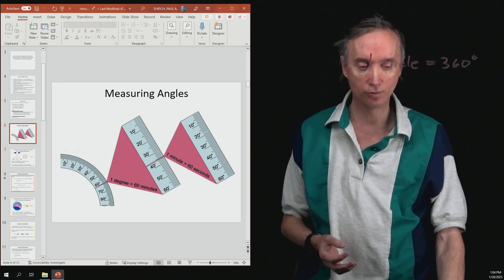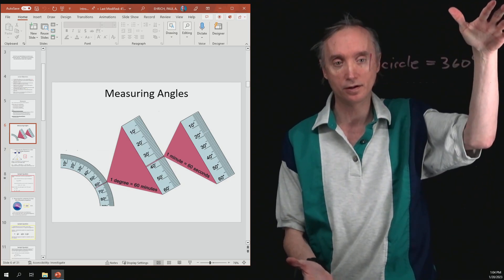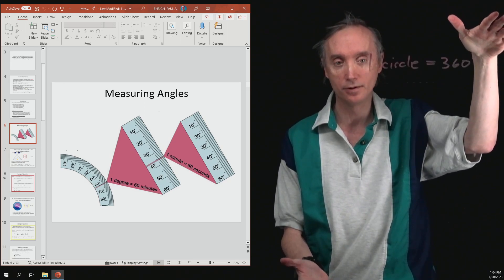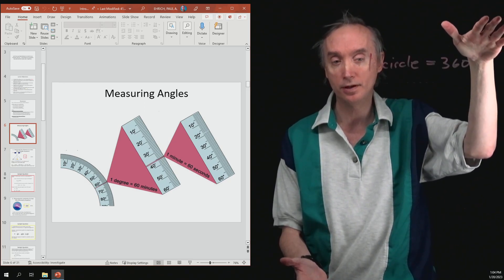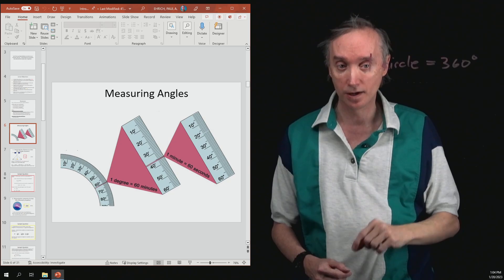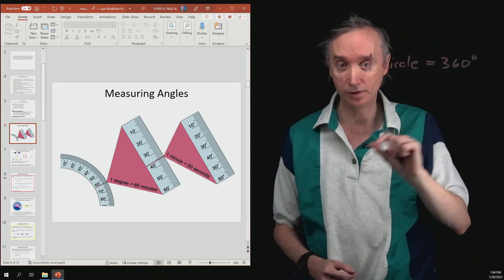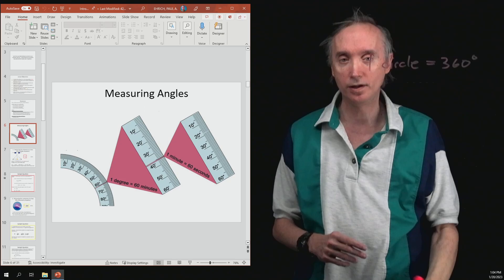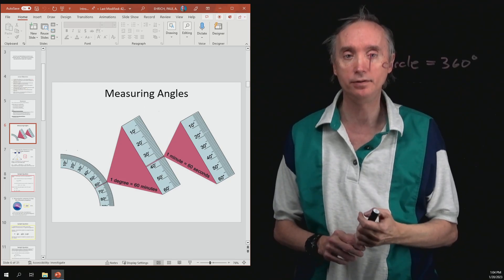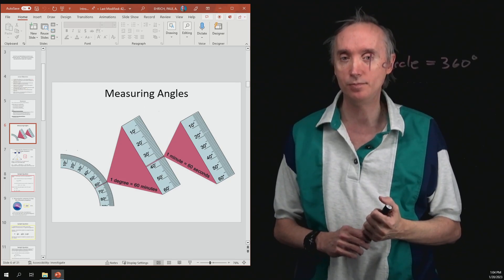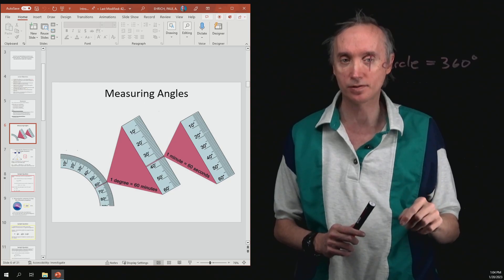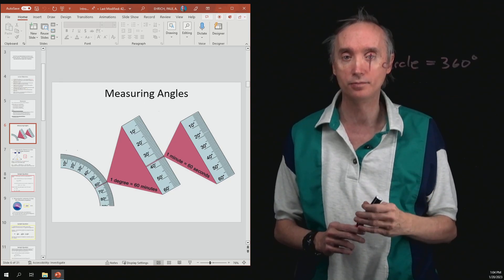Do you remember how we could take the meter stick, which is about this big, and chop it up into a thousand pieces, and those were the millimeters? Well in the same way we could take 1 degree and chop it up into 60 pieces, and each of those pieces is called an arc minute.